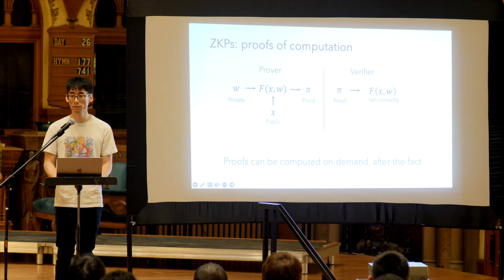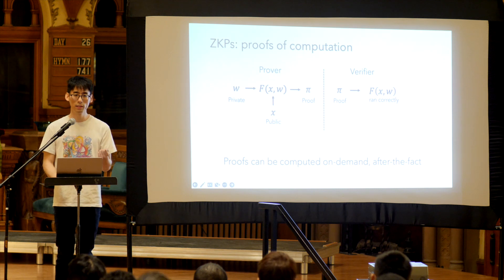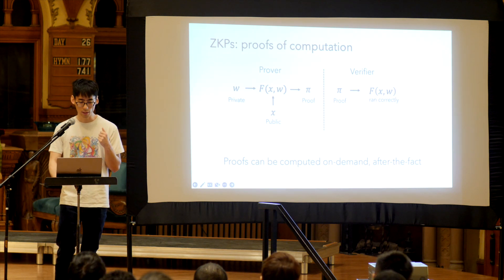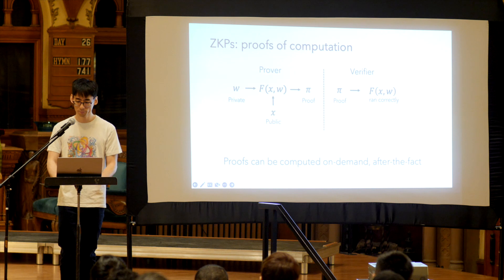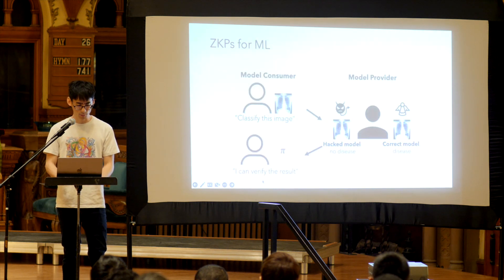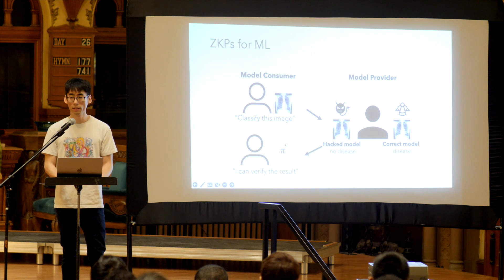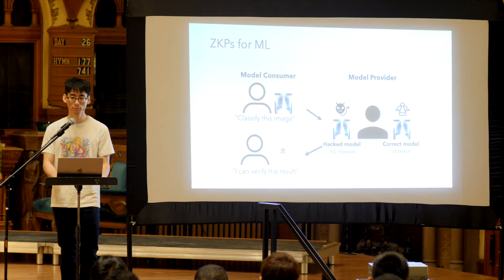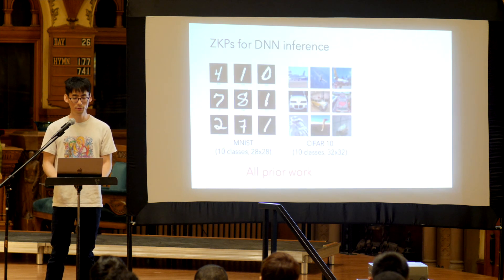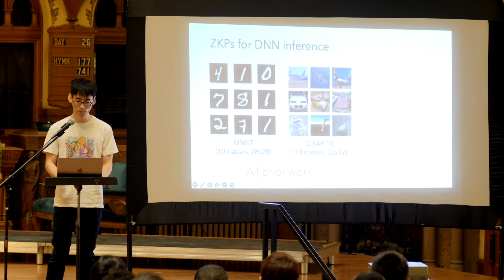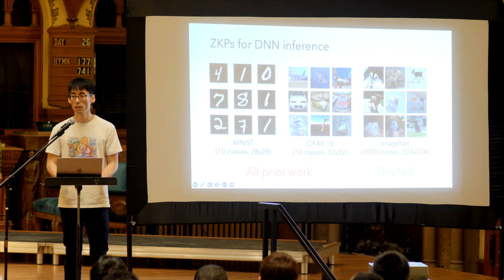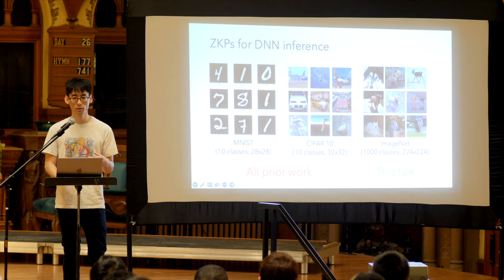These proofs can be computed on demand and after the fact, so in the context of a model provider, you can first serve the inference, and then if the consumer wants a proof after the fact, this can be done without delaying the original latency. The model provider can provide a proof pi that the actual correct model ran. All prior work on zero-knowledge proofs for deep learning inference works on MNIST or CIFAR-10, which are unrealistically small — no one uses these models in production. I'll describe how to scale up to ImageNet, which covers real models being used today.